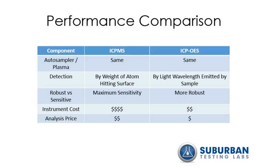Now let's discuss the performance comparison between the ICP-MS and the OES. The auto sampler and the plasma are the same for both instruments. The detection is where it starts to get different. OES detectors are extremely rugged, much more so than the MS, but less sensitive for most elements. Detection on the MS is measured by the weight of an atom hitting the surface, while OES uses the light wavelength emitted by the sample. The MS is much more sensitive but more prone to damage or interference from samples. So you have more robust capability with the OES, but maximum sensitivity with the MS.